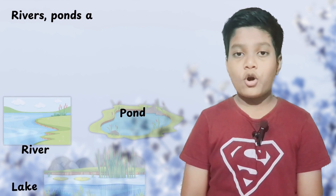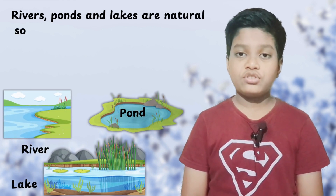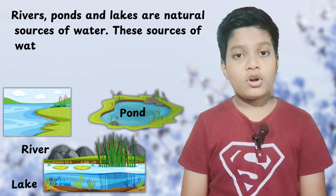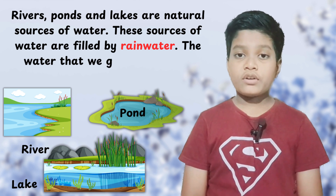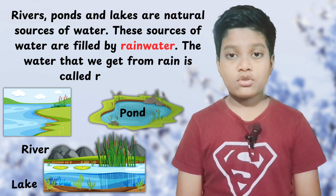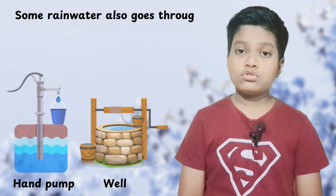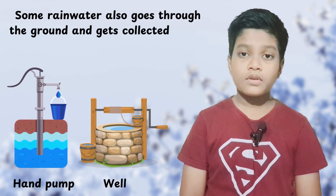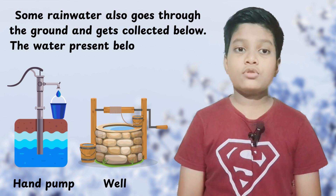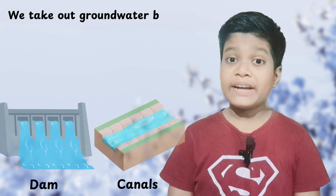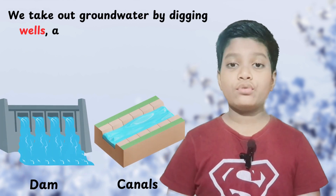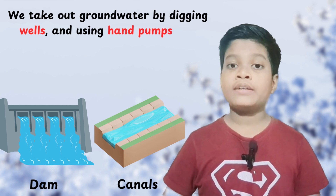Rivers, ponds and lakes are natural sources of water. These sources of water are filled by rainwater. The water that we get from rain is called rainwater. Some rainwater also goes through the ground. The water present below the ground is called groundwater. We take out groundwater by digging wells and using hand pumps and tube wells.